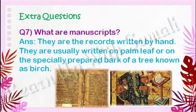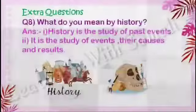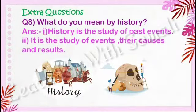Question number seven: What are manuscripts? They are the records written by hand. They are usually written on palm leaf or on the specially prepared bark of a tree known as birch. Question number eight: What do you mean by history? History is the study of past events, their causes and results.